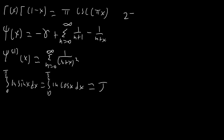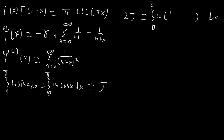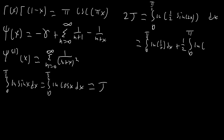If we add those two integrals together and use the properties of logarithms, we'll end up with the integral from 0 to π/2 of ln(sin x · cos x) dx. Since sin x · cos x = ½ sin(2x), this becomes the integral from 0 to π/2 of ln(½ sin(2x)) dx, which splits into the integral of ln(½) dx — which is just −(π/2)ln 2 — plus, after the substitution u = 2x, an integral from 0 to π of ln(sin x) dx.